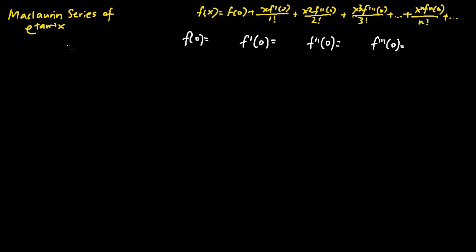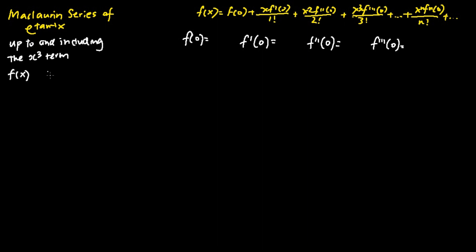In this particular problem, we will be expressing the Maclaurin series of e to the power of tangent inverse x up to and including the x cubed term. We first define our function f(x) to be equal to e to the power of tangent inverse x. Next, we find f'(x), which is the function differentiated one time.